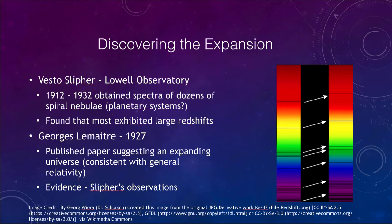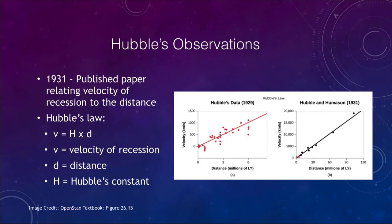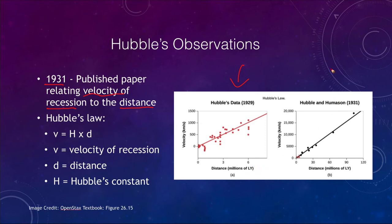Edwin Hubble in 1931 published a paper relating velocity of recession — how fast a galaxy was receding — to the distance of the galaxy. His original data from 1929 covered only a small portion for very nearby galaxies, going out to a few million light years. By 1931 he had added more data going out to a hundred million light years and was able to see a very distinct relationship between velocity on the y-axis and distance on the x-axis.